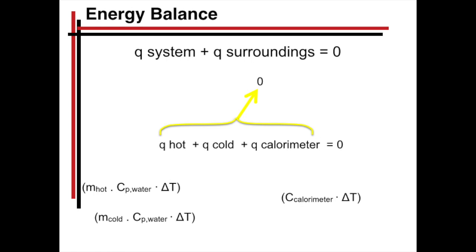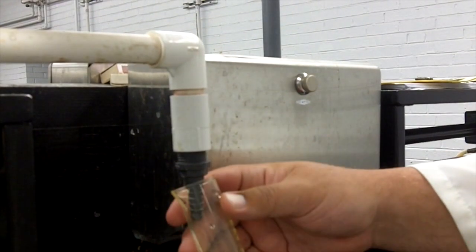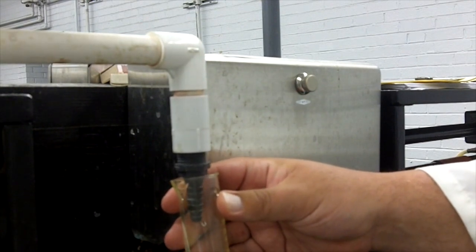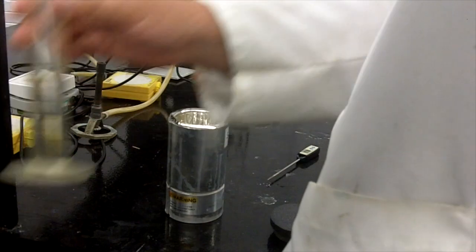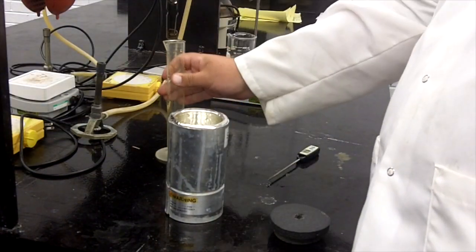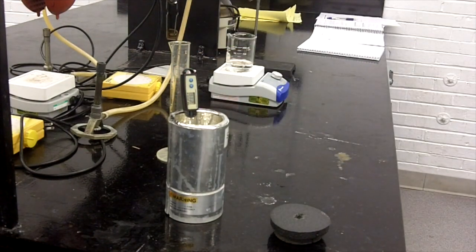What you're going to do first then is you're going to try to calculate the calorimeter constant. Every calorimeter has a constant, and so you should be able to measure that. We'll give you the general idea. The general idea is you're going to have hot water that's about 60 degrees. You're going to have cool water, you can probably get from the tap or deionized, it doesn't matter. You're going to then have to mix those two in the calorimeter. So you need to design a procedure that will allow you to get a reproducible value for the calorimeter constant. We're going to let you figure this out.